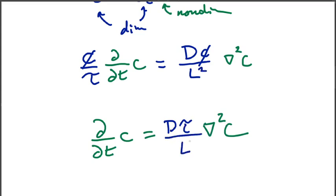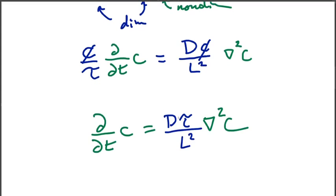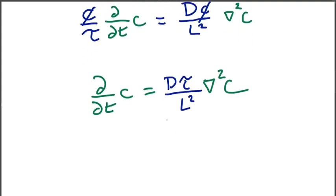D times tau over L squared. And Dτ/L² must have units, dimensionless units. And this is our dimensionless number.